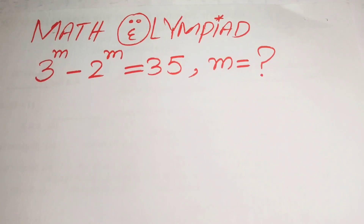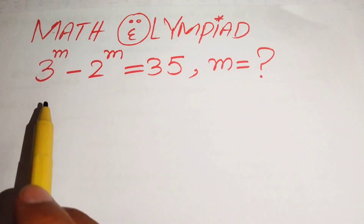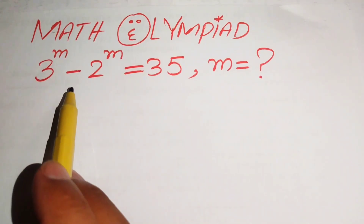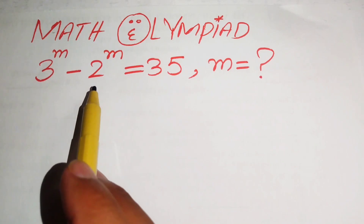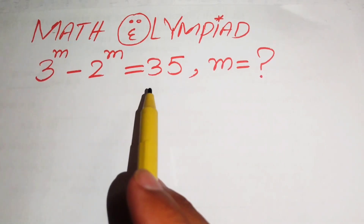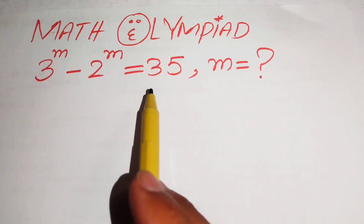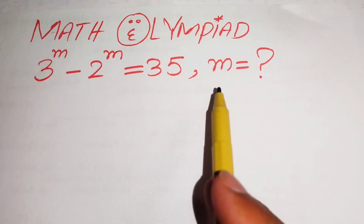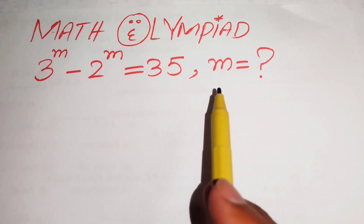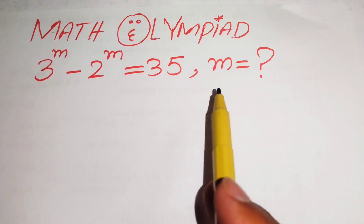Welcome to this math olympiad algebraic challenge. Here we have 3 to the power of m minus 2 to the power of m equals 35, and we solve this problem for the real values of m.